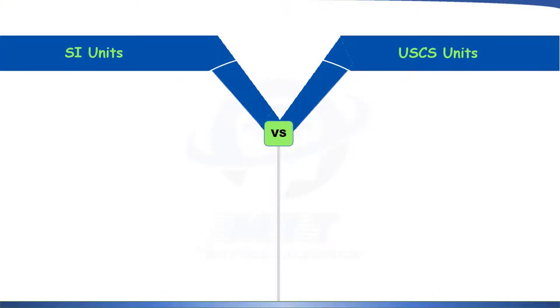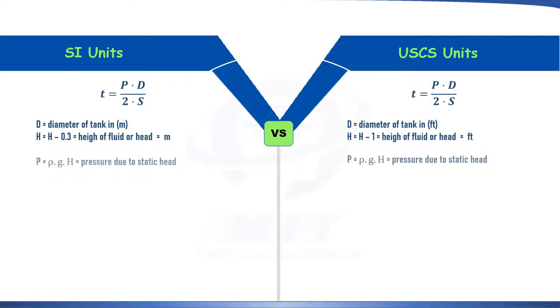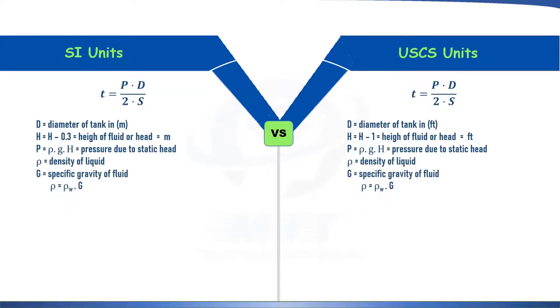We will derive this one foot method equation in both units that is SI or metric units and USCS or US customary unit. We begin with Barlow's formula that is thickness is equal to P times diameter upon twice of stress. And we will use the same units that are given in the code itself. That is diameter is in meter, height in meter also. And as we have stated in the previous slide, height equal to H minus 0.3 or for USCS unit height is equal to H minus 1 foot. So we will just calculate height at a location of 0.3 meter or 1 foot above the bottom of the shell course. And as we know that pressure due to static head is equal to rho GH, here rho is the density, G is the acceleration due to gravity and H is the head of the liquid.